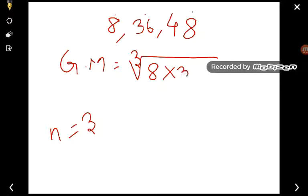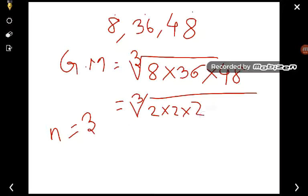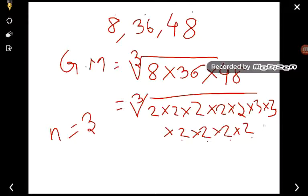So cube root of 8 into 36 into 48. Now we have to expand these numbers. Eight can be written as 2 into 2 into 2. Thirty-six can be written as 2 into 2 into 3 into 3. Forty-eight can be written as 2 into 2 into 2 into 2 into 3. So this 2 can be taken out, this 2 can be taken out, next this 2 and 3. So we'll get 2, 2's are 4, 2's are 8, 3's are 24. So 24 is the geometric mean.